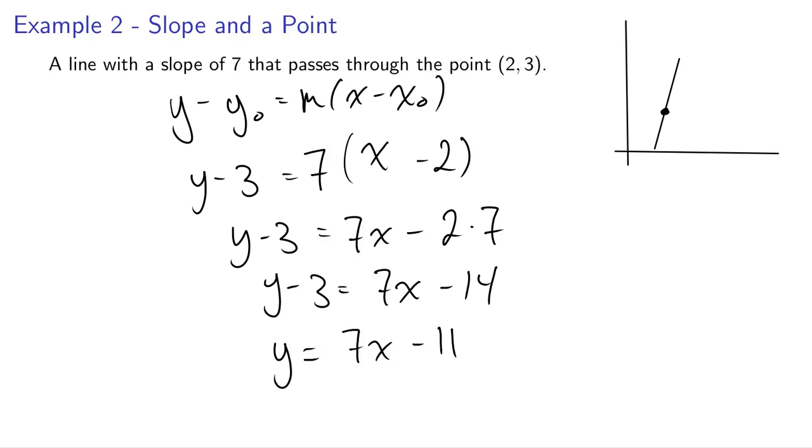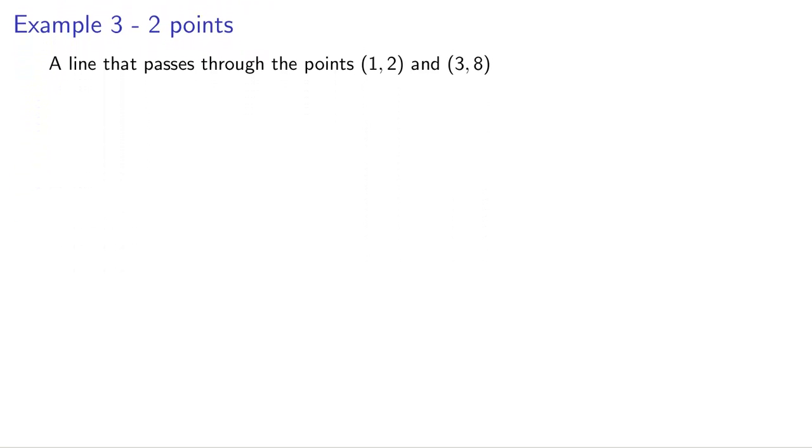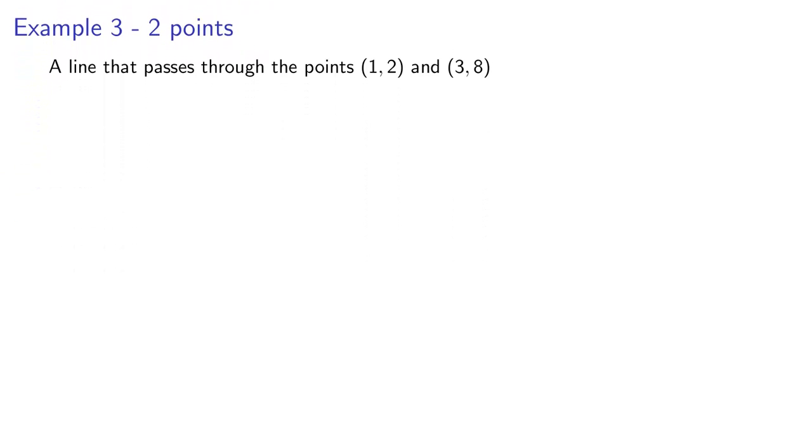What if they're not so nice to us? What if they don't give us that slope? What if they just tell us two points that the function passes through? We still want to keep that first step: we still want to find our slope. So what do we remember about slope?